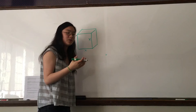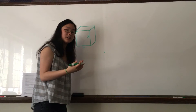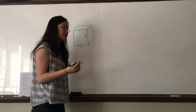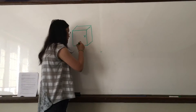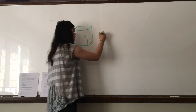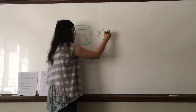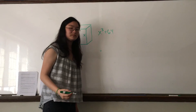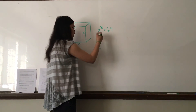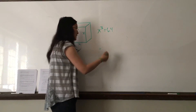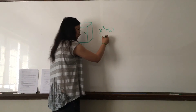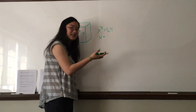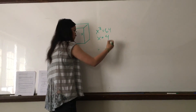You know that the volume is 64, and the volume for a cube is just the side length cubed, so x cubed equals 64. If you solve this on your calculator, you get the side length x equals 4.